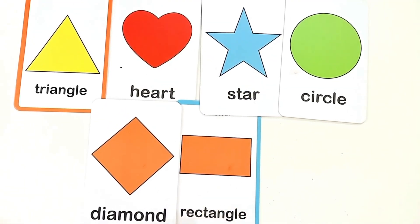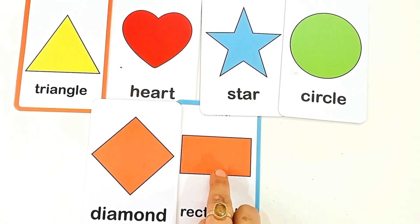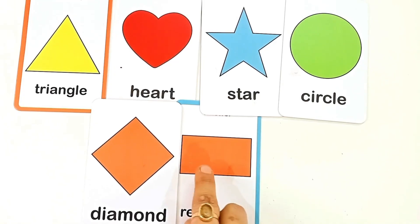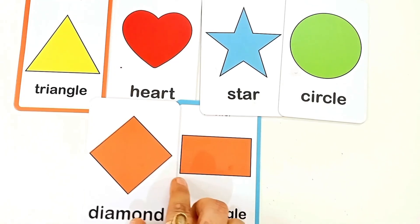R for rectangle. R-E-C-T-A-N-G-L-E rectangle. This is rectangle shape. And the color is orange color.